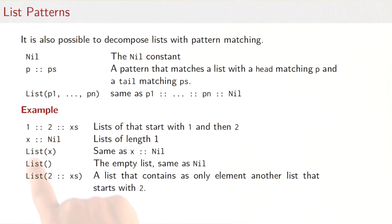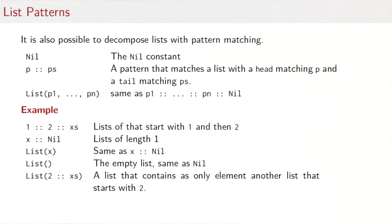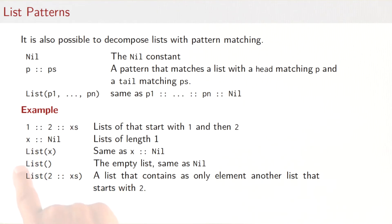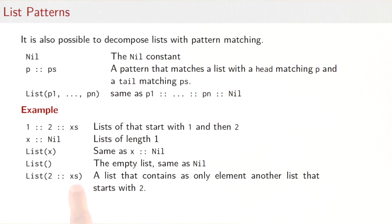Here are some pattern examples. The pattern '1 :: 2 :: xs' matches lists whose first element is 1, second element is 2, and the rest is arbitrary, bound to variable xs. The pattern 'x :: Nil' matches lists of exactly length one, binding the element to x. The pattern 'List(x)' is exactly the same as 'x :: Nil'. The empty list pattern 'List()' is the same as Nil. The pattern 'List(2 :: xs)' matches a list with a single element that is itself a list starting with 2, with its tail bound to xs.